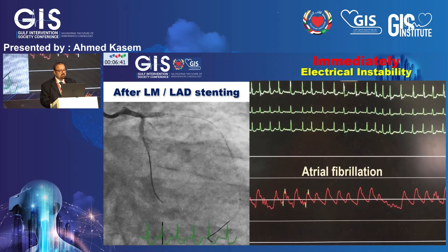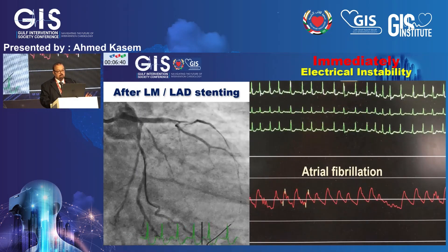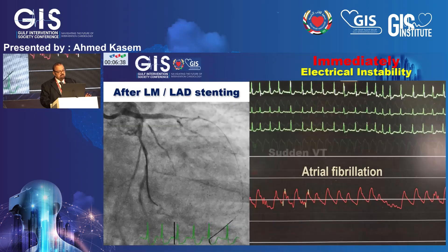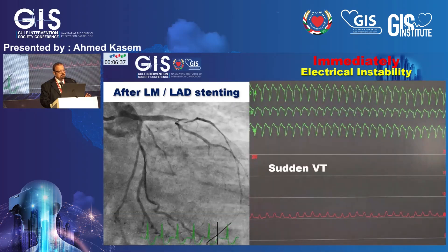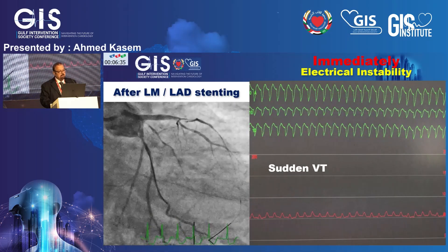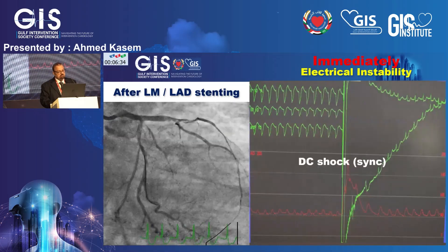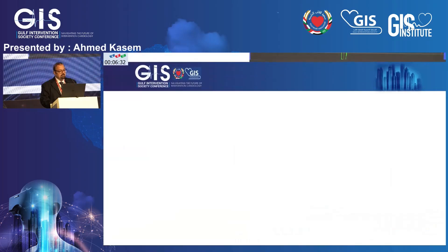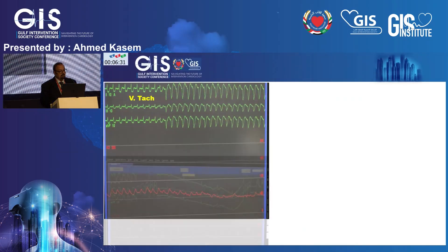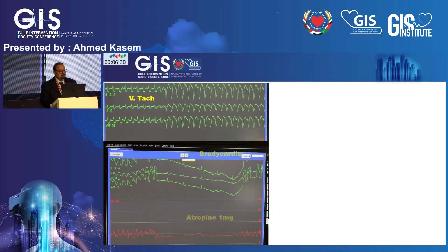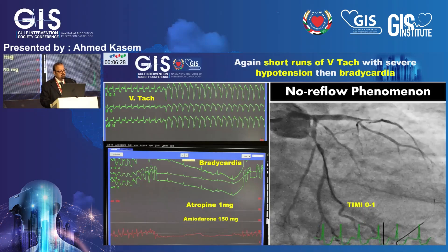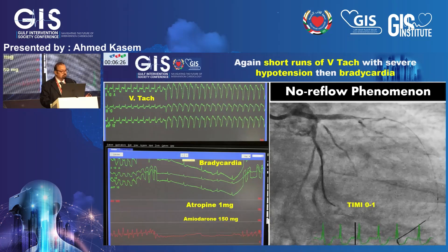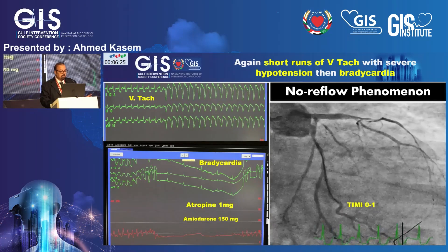Immediately after deployment of the stent, the patient became electrically unstable and developed ventricular fibrillation. Within a few seconds, she developed VTAC with severe hypotension. DC shock was delivered. After a few minutes, the patient returned to VTAC again, but degenerated to bradycardia.